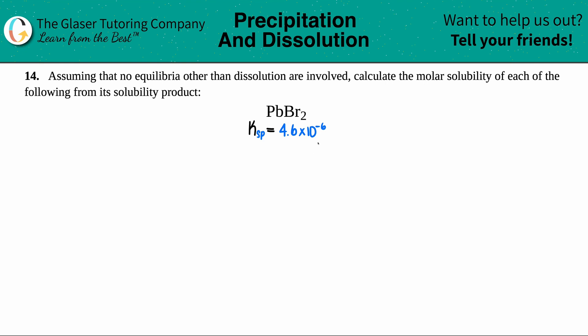Number 14, assuming that no equilibria other than dissolution are involved, calculate the molar solubility of each of the following from its solubility product. And then we have the ionic compound PbBr2.